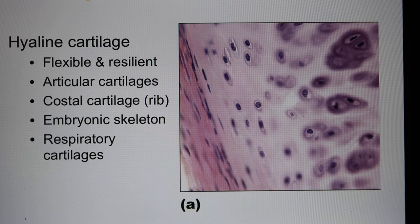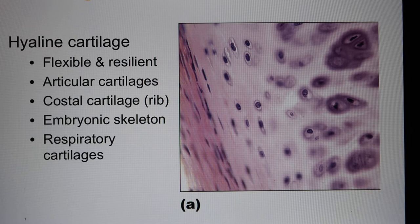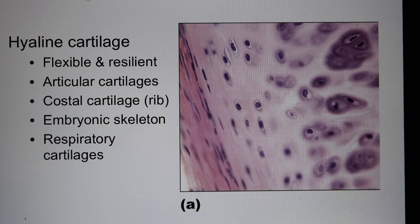The first kind of cartilage is hyaline cartilage, and that's the most abundant one found in the body. You find it between bone and bone at the joint. Also between the ribs and the sternum you have hyaline cartilage. It's also used in the embryonic skeletal system — when the embryo develops the bone system, they develop cartilage first and then slowly turn it into bone.